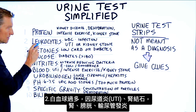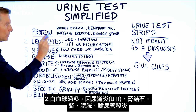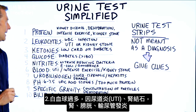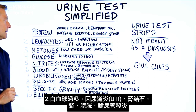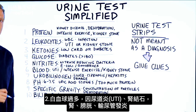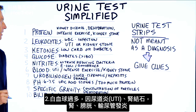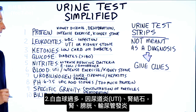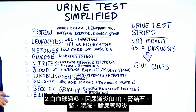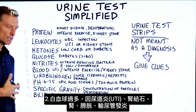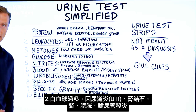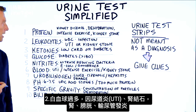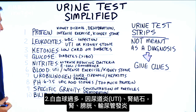Next we have leukocytes — that would be white blood cells. That would be a sign of an infection. It could be a UTI, it could be a kidney stone, or it could be some type of infection anywhere in the kidney, the bladder, or the ureters.